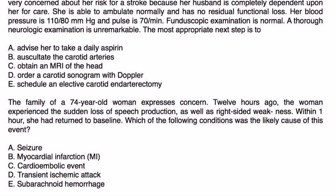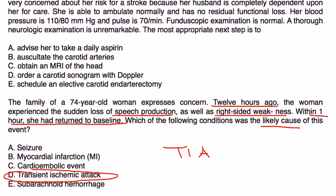Next one. The family of a 74-year-old woman expresses concern. 12 hours ago, the woman experienced sudden loss of speech as well as right-sided weakness, and within one hour she returned to baseline. Which of the following conditions was likely cause of this event? This question doesn't give us that much information, but it's just a straightforward question that's basically saying she had a TIA. She had some symptoms that resolved pretty quickly in less than one hour.